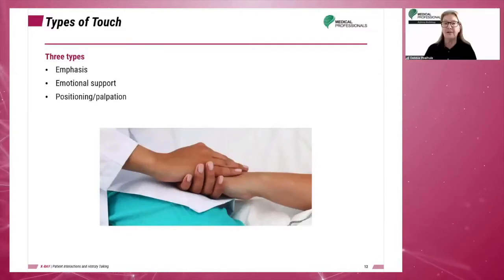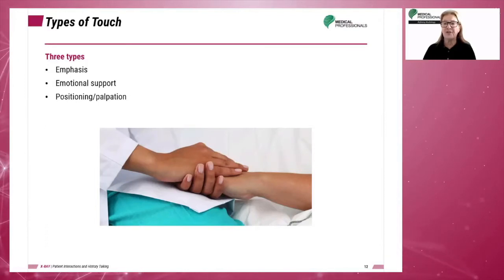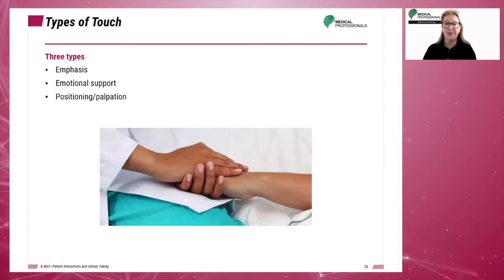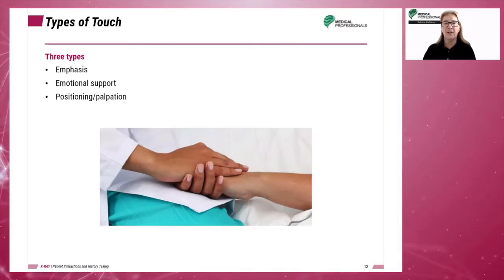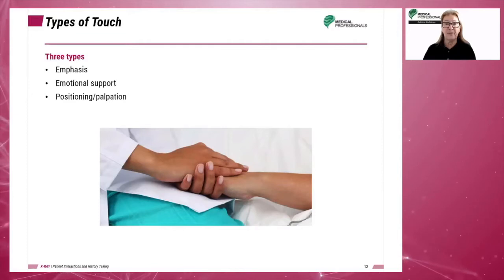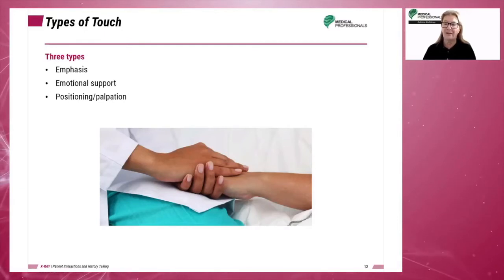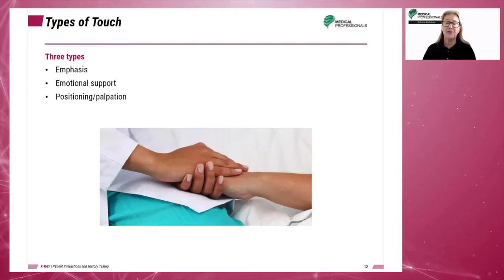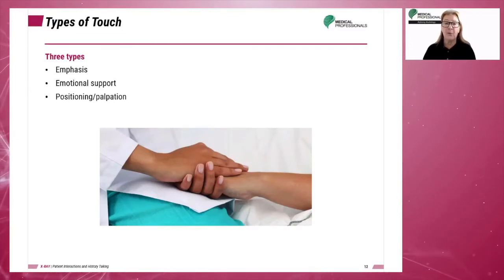Before touching the patient, the technologist should request permission. The three types of touch are touch for emphasis, touch for emotional support, and touch for positioning and palpation. Touch for emphasis could involve moving a body part into a specific position. Positioning and palpation touch is absolutely necessary in imaging and could involve checking for bony landmarks.